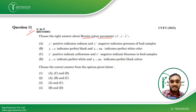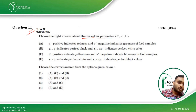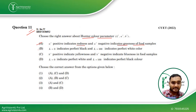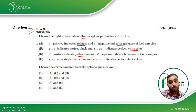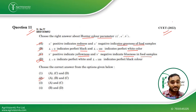Coming to Question 11, which is from Hunter color parameters — this is from your sensory evaluation chapter. Hunter color parameters numerically measure the color of any food item and match it against standard values. A positive indicates redness and A negative indicates greenness — correct. L=0 indicates perfect black and L=100 indicates perfect white — correct. B positive indicates yellowness and B negative indicates blueness — correct. The statement that L=0 indicates perfect white and L=100 indicates perfect black is wrong. So A, B, and C are correct, making the second option the right answer. This was asked in CUET 2022.